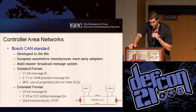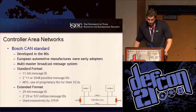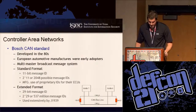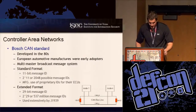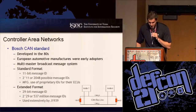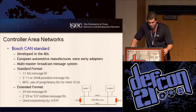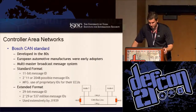CAN comes in two flavors: the standard format used on passenger automobiles, which uses an 11-bit message ID, and the extended format. In the passenger automobile world these message IDs are proprietary. When talking about J1939, the protocol for the heavy trucking industry, it uses a 29-bit message ID and the whole standard is fully documented. So if someone wanted to create a message to override a brake controller, they'd simply refer to the Society of Automotive Engineers documentation for J1939 to construct such a message.